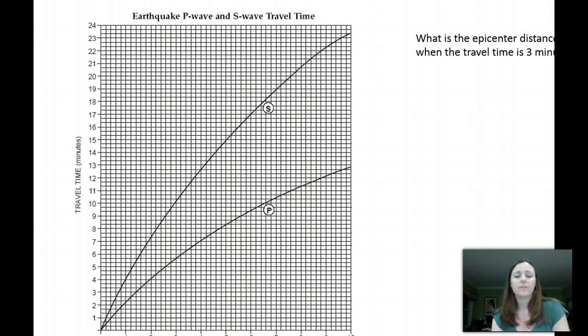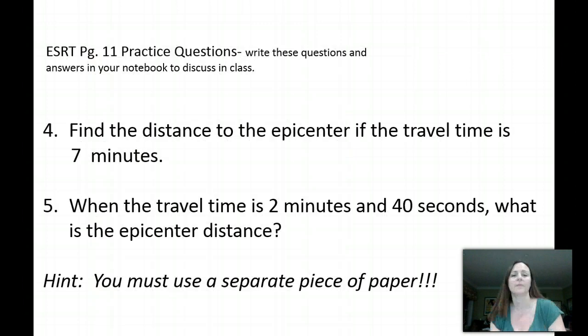Let's try another one. We're going to find the epicenter distance when the travel time is 3 minutes. So again, we're going to go to the step where we look for the travel time on the side. Again, use your piece of paper. Mark down the two notches from 0 to 3 minutes, wherever that may be. Take that piece of paper, slide it up until the top reaches the S wave, the bottom reaches the P wave, and then you look down. And looking down, you will see that you get to right below the 3,000 mark, which is 1,800.